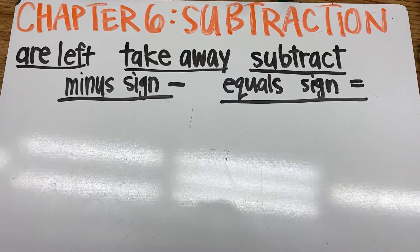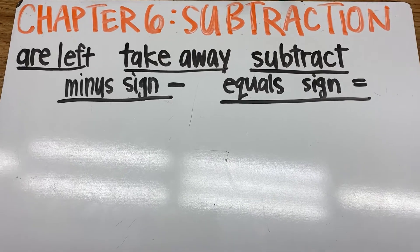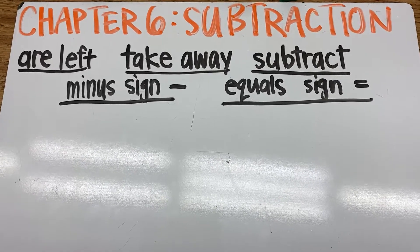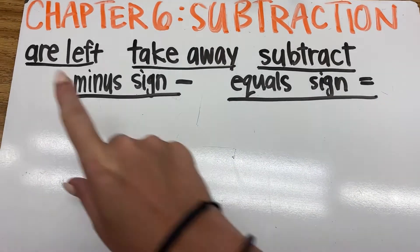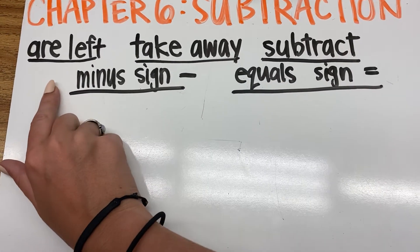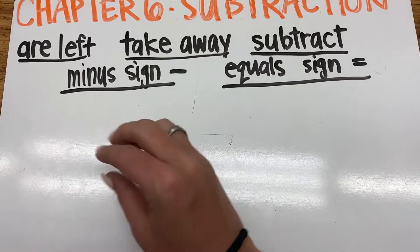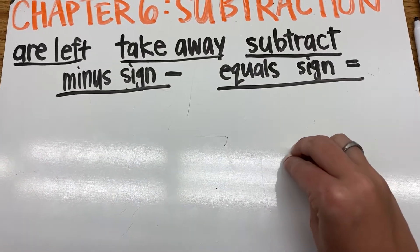All right, guys, we are going to look at chapter six, which is all about subtraction. So let's review really quickly the vocab that we learned. The first words are are left. So that's talking about if we have a group of objects and some go away, how many are left?